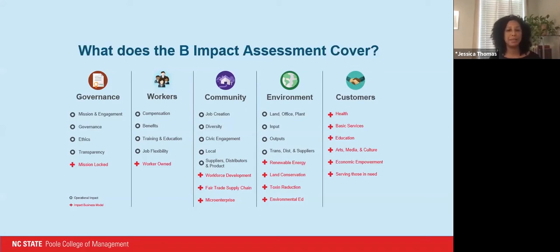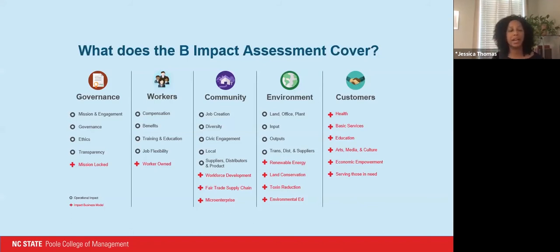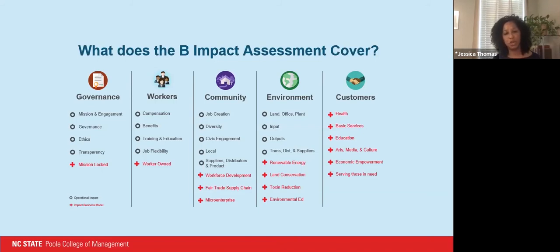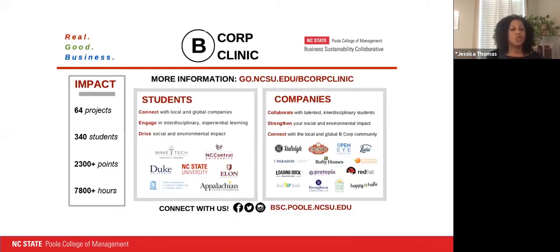The B Impact Assessment covers hundreds of questions across five areas. For example, it looks at what percentage of employees are paid a fair wage, how much time employees volunteer with local nonprofits, and awards more points for higher percentages in each area. It provides a broad, rigorous, comprehensive framework to help companies measure and improve their impact across a company's different stakeholders.